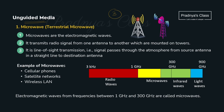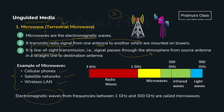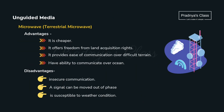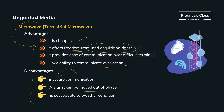Now it's time for unguided media. The first is microwave, also called terrestrial microwave. These are electromagnetic waves with frequency between 1 GHz to 300 GHz. With no physical wiring, it transmits radio signals from one antenna to another — also called line of sight transmission. Examples include cellular phones, satellite networks, and wireless LAN. Advantages: it is cheaper and offers freedom from land acquisition rights; we can set up communication over hilly areas or even over oceans. Disadvantages: communication is insecure and may be affected by weather conditions like rain and thunderstorms.